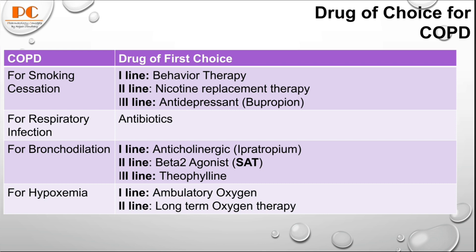Next is COPD — chronic obstructive pulmonary disease. For smoking cessation: first line is behavioral therapy, second line is nicotine replacement therapy, and third line is the antidepressant bupropion. For respiratory infections, use antibiotics. For bronchodilation: first line is anticholinergic drugs like ipratropium and tiotropium; second line is beta-2 agonists like salbutamol and albuterol; third line is theophylline. For hypoxemia: first line is ambulatory oxygen; second line is long-term oxygen therapy.